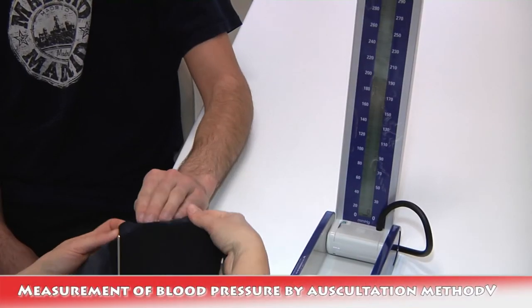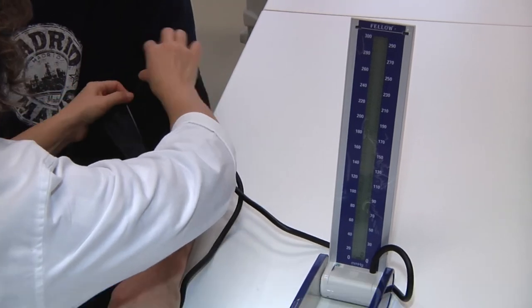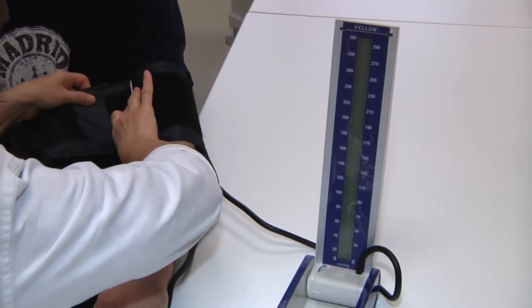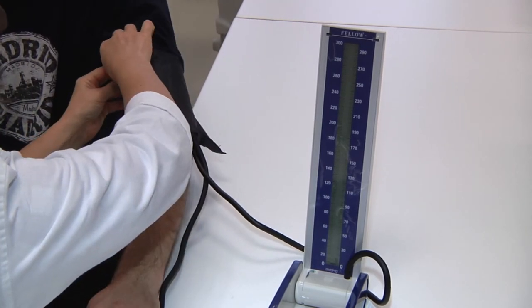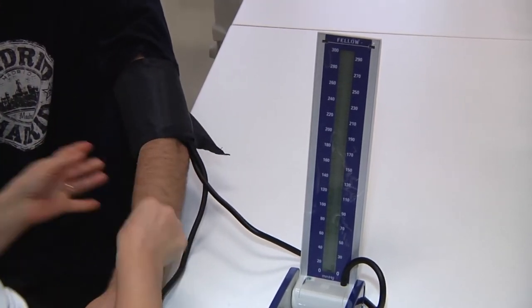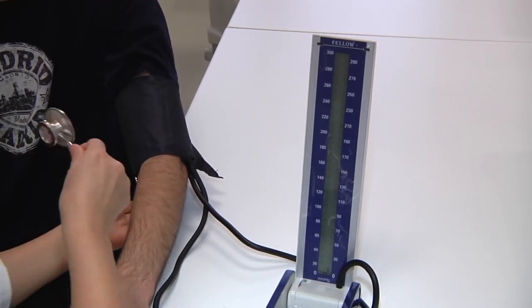This practical task will demonstrate the auscultation method of blood pressure measurement. After proper application of the cuff on the arm, it should not be too loose or too tight. We will put the stethoscope into the cubital fossa to listen to sound phenomena occurring here later.